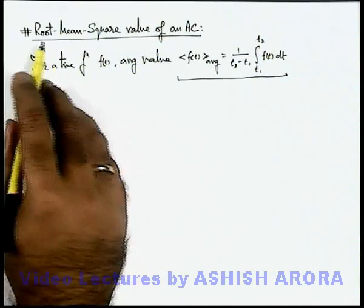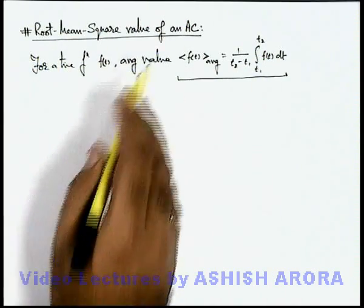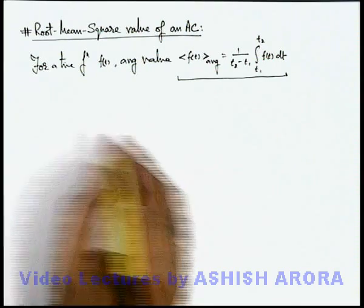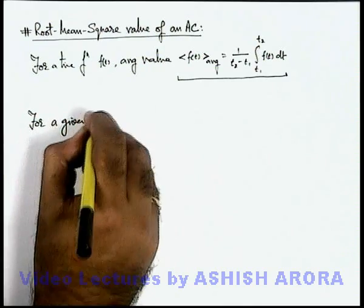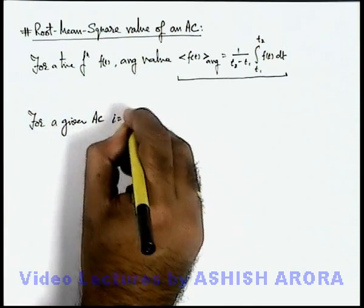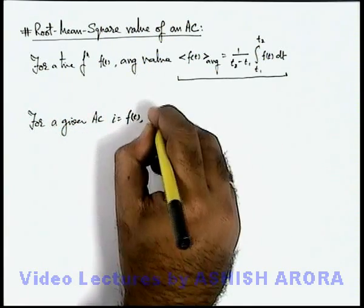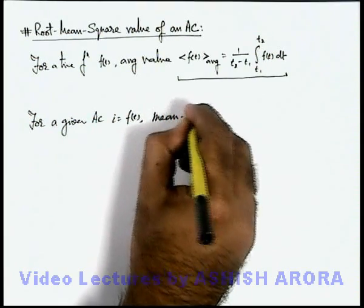Now, here we are required to study root mean square value of an AC. So we can write, for a given AC which is given i as a function of time, first we define mean square value.